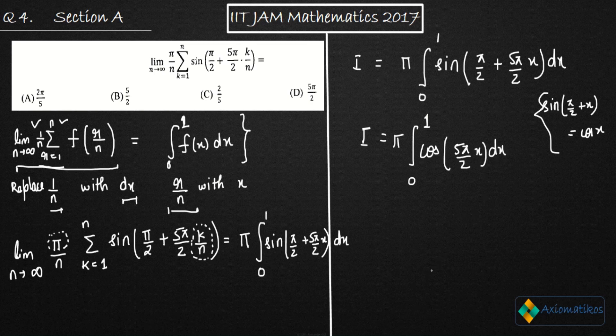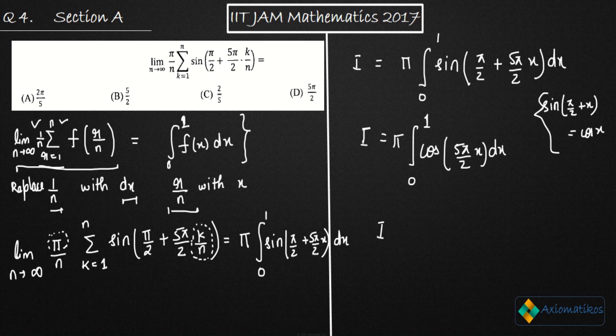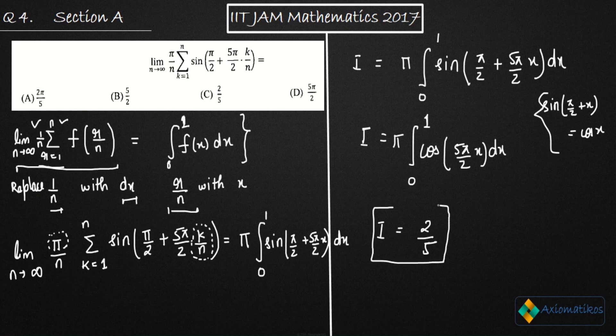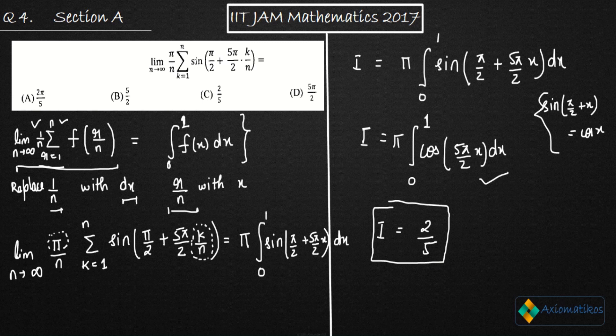Now, you know the integration of cos X and using that integration, what you will get that your answer is 2 over 5. So after calculating this integral, you will end up with this. This is very easy. I'm not going to calculate it. So from here, what you are getting that 2 by 5 is your answer.